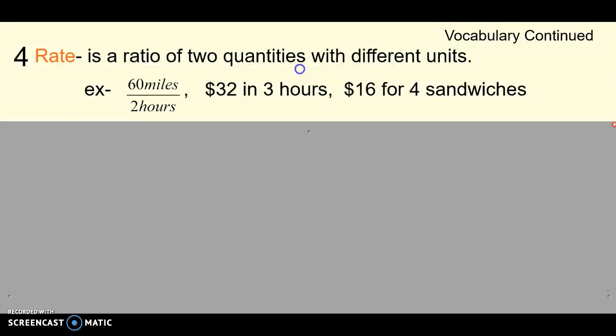So we'll keep going with the vocab. A rate. A rate is a ratio of two quantities that have different units. So I could give these different examples. The rate of how fast you're driving is miles and hours - sixty miles and two hours. Or dollars and hours - thirty-two dollars and three hours. That's a rate of how much money you make. Or sixteen dollars for four sandwiches. That's the rate or the cost of the sandwiches. So a rate is just comparing two quantities that have different units.